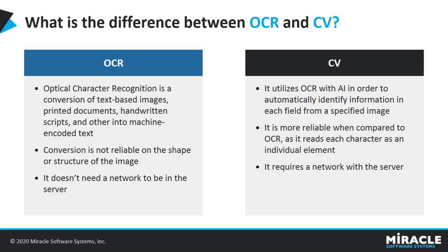By using CV activities, it helps identify image elements individually with human-like recognition, which is far more reliable than OCR. Another difference is that OCR doesn't require a network connection to a server, while CV requires a network connection. If the server is down, it may raise an issue like 'server cannot be reached,' resulting in bot failure — which would not happen with OCR.